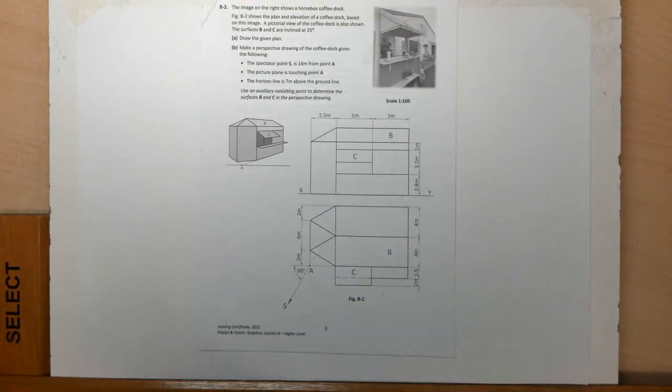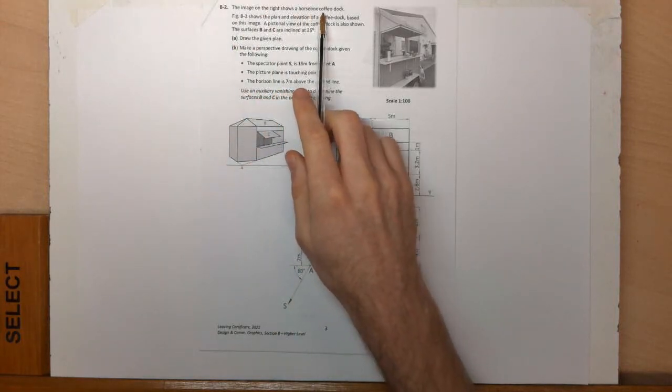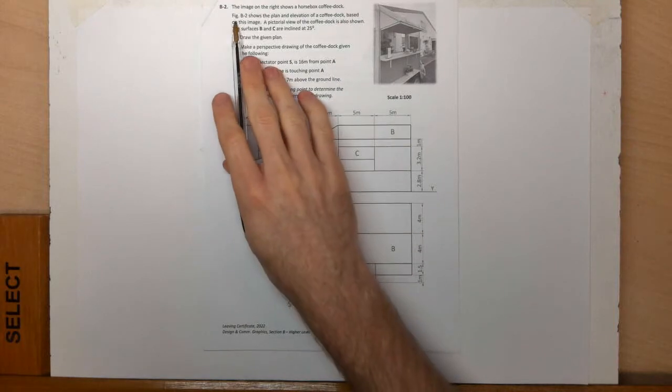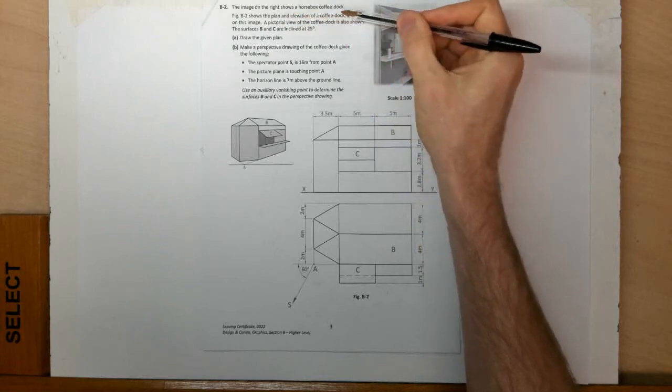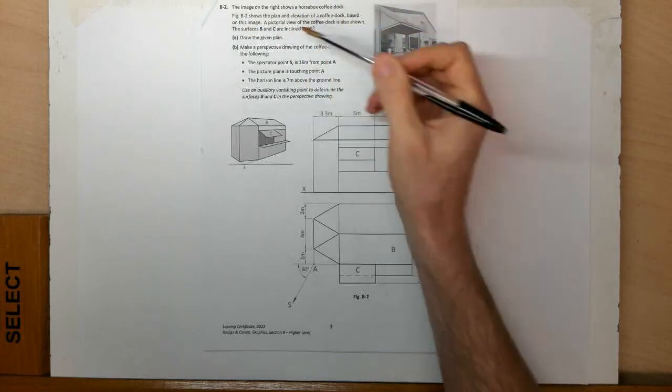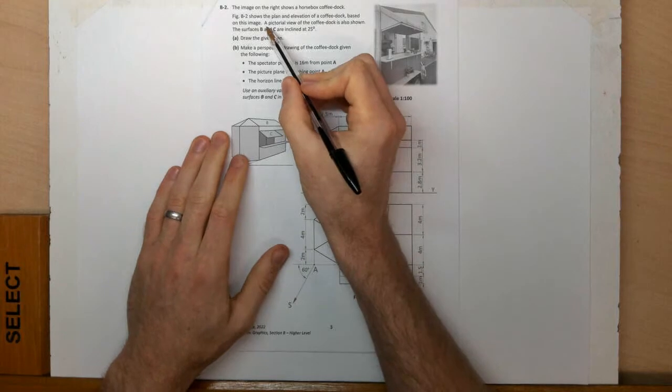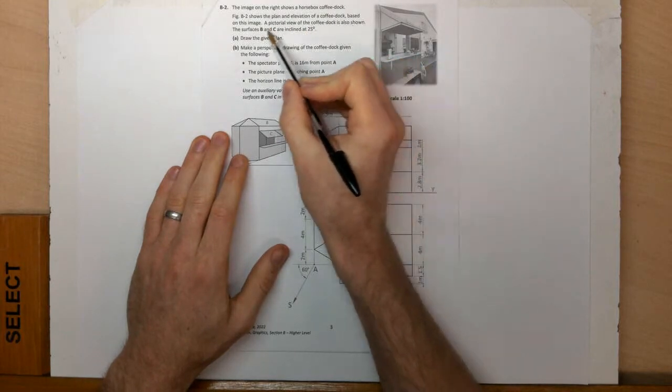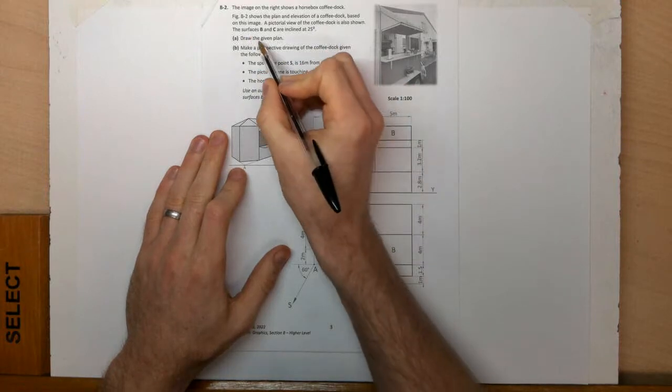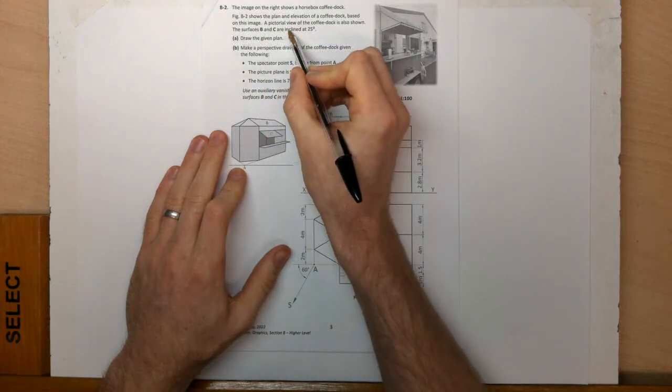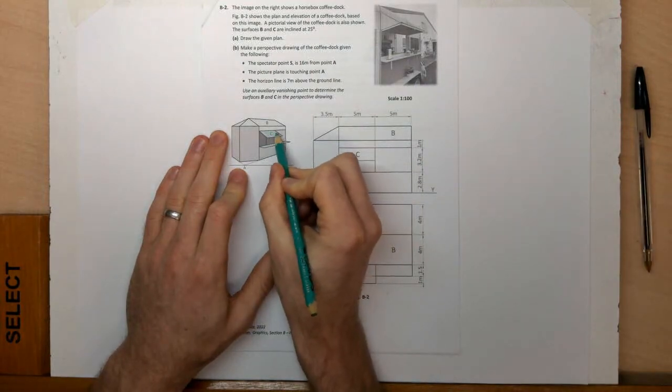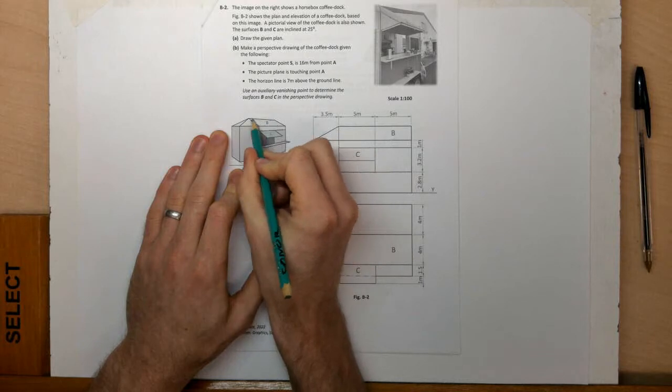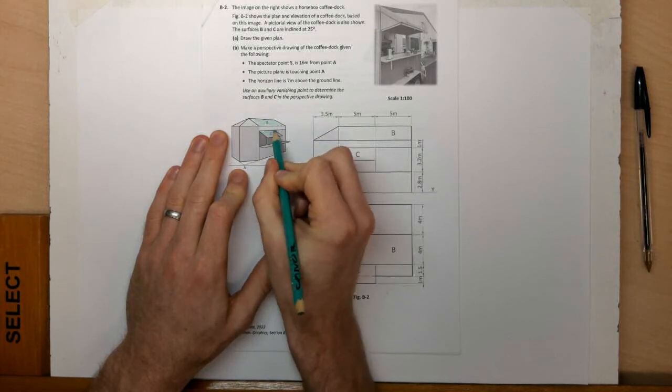Welcome back to 2022 question B1. This is our perspective question. The image on the right shows a horsebox coffee dock. Figure B2 shows a climbing elevation of the coffee dock based on this image. The pictorial view of the coffee dock is also shown. Surfaces B and C are inclined 25 degrees. This surface C and this surface B are inclined 25 degrees.